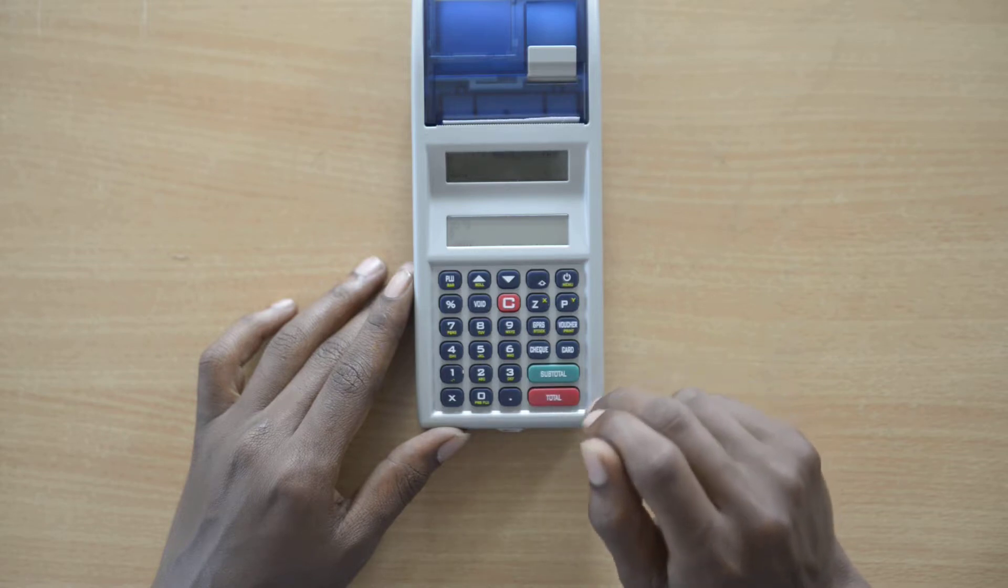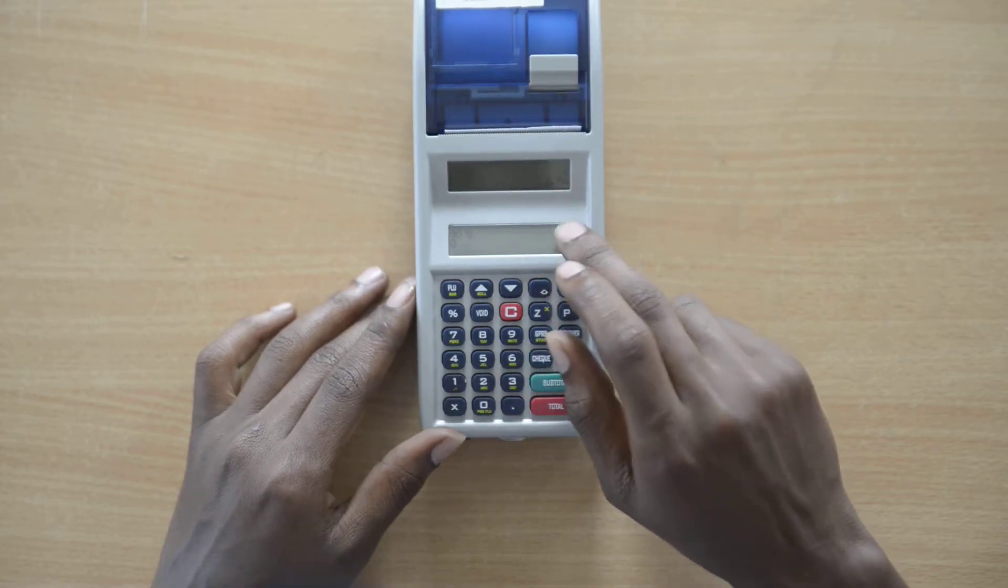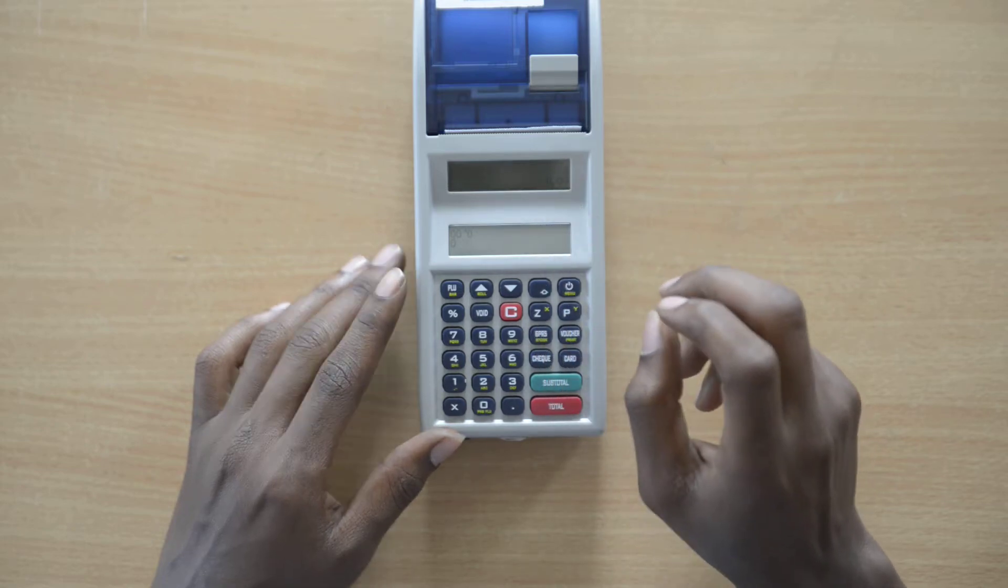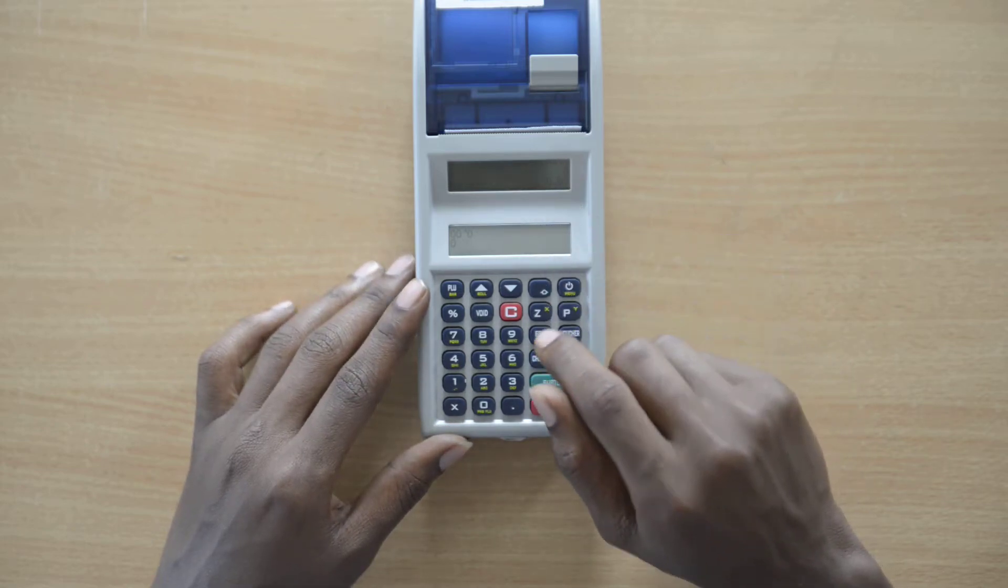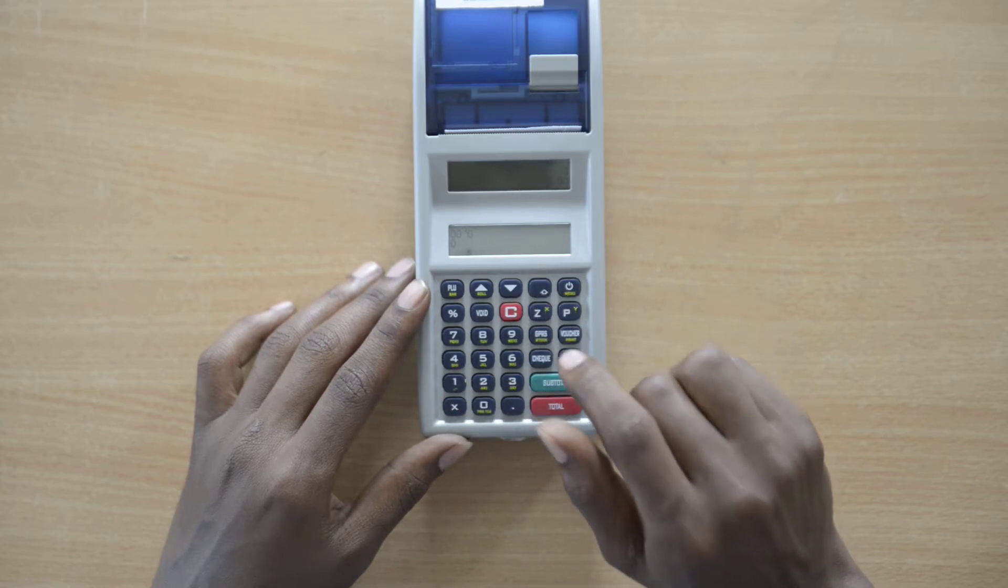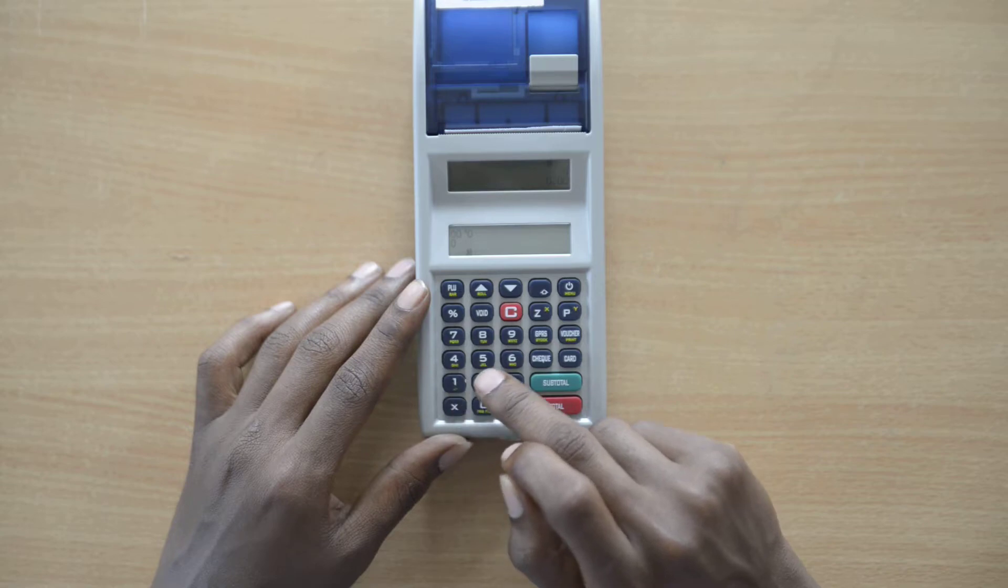Once you press Toto, it displays 0.00. This is the place for putting the code number of the item. Before putting the code number, you press shift, then enter the code number of the item. For this machine, the item code is number 10.